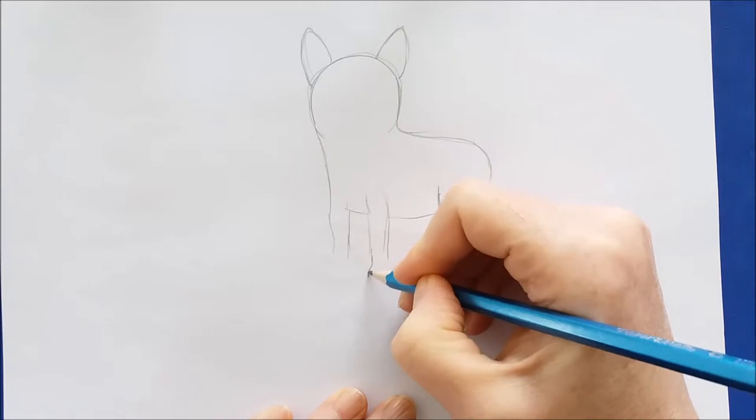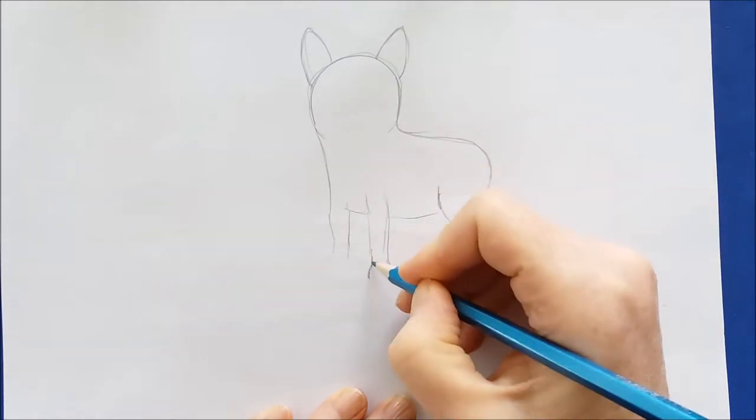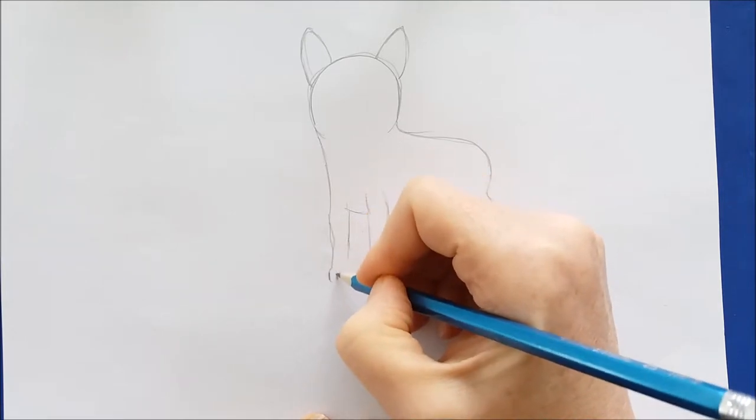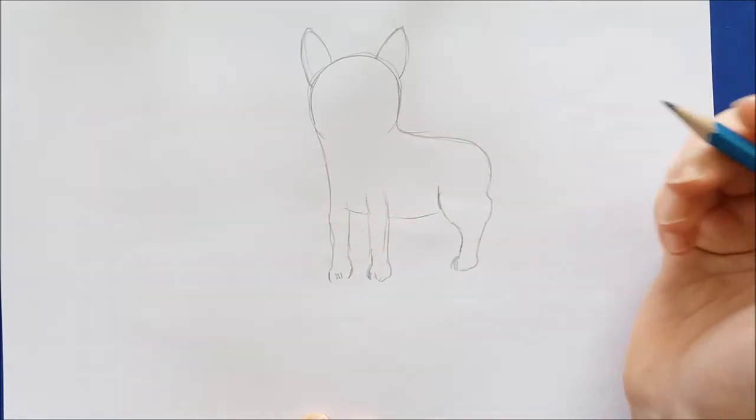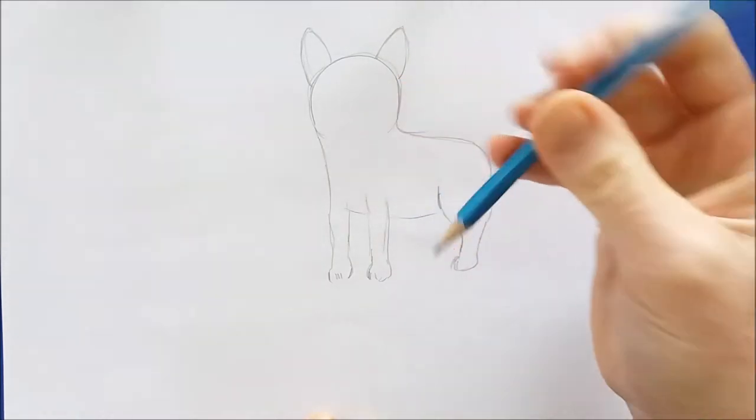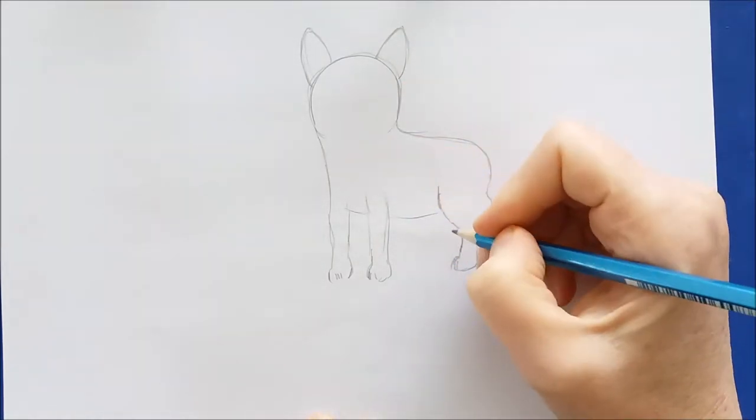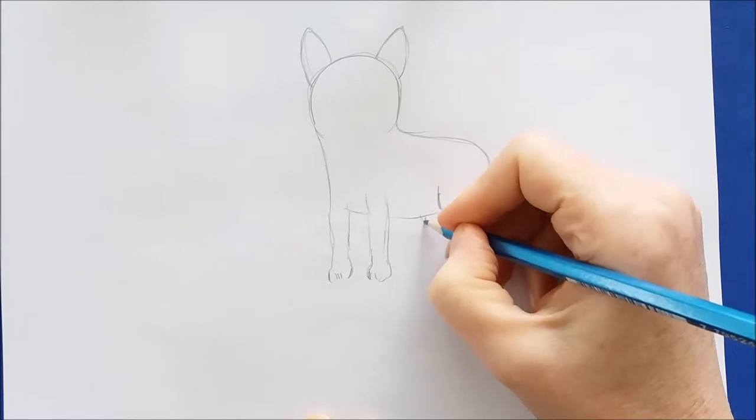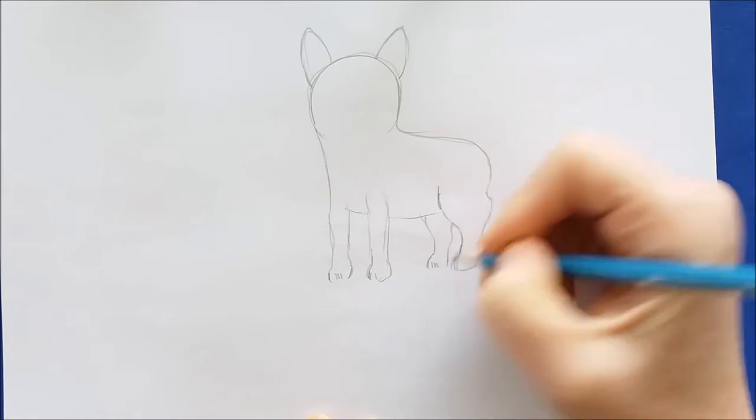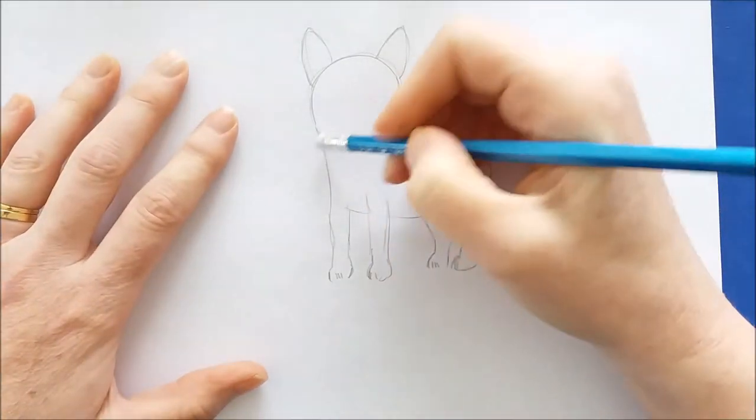Then I'll draw the paws in on the front legs, which are just little curved toe shapes. When we're done with that, we'll add the other hind paw, which is just a curved line, again with those little toe shapes at the very bottom of the foot.